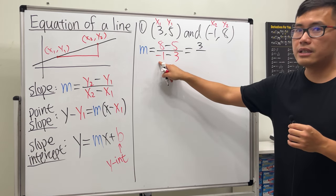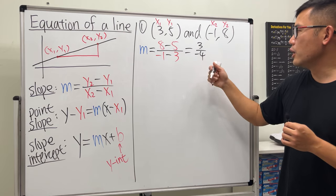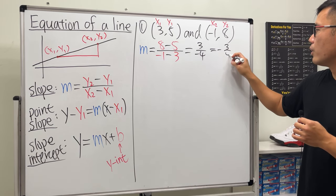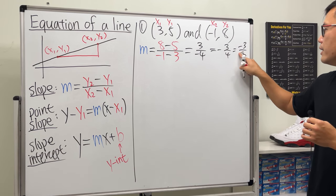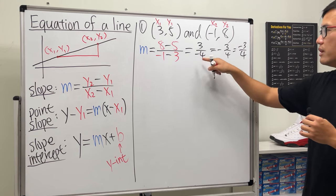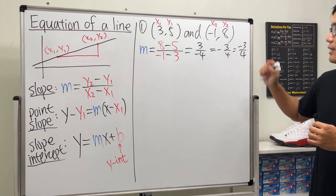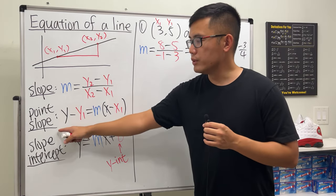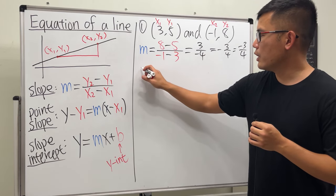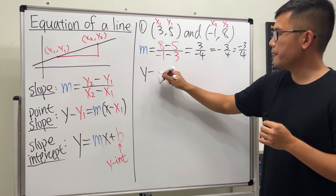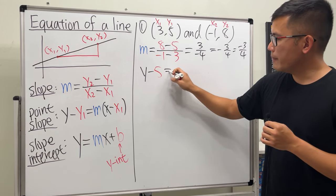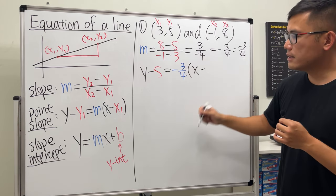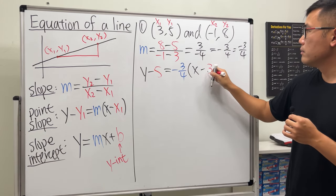On top that's 3, and on the bottom −1 − 3 = −4, so the slope is −3/4. Note that with a negative fraction, the negative can go in front, on the top, or on the bottom — they are all the same, but placing it in the numerator is preferred.